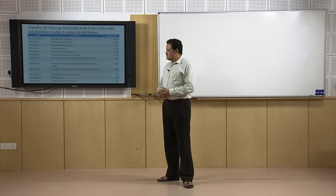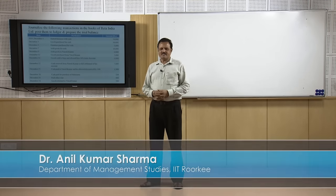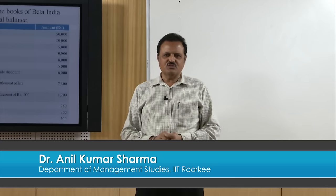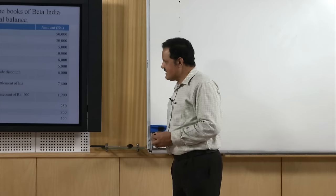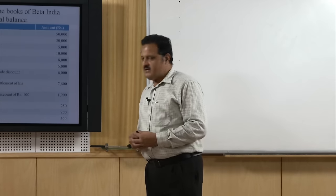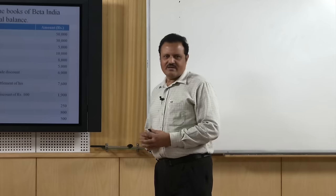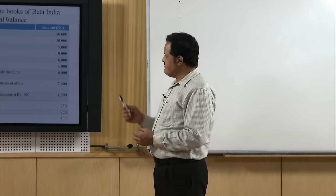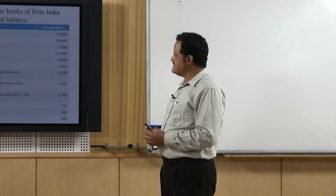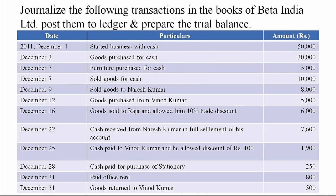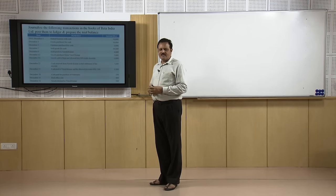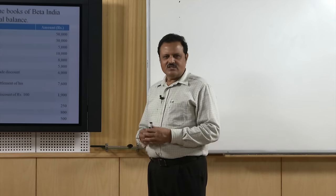Welcome students. Continuing from our previous discussion, we were learning how to prepare the journal, the first or original book of accounts. We were passing journal entries and had finished 9 transactions. Three more transactions are left. We will record these 3 transactions in the journal and then move to the ledger, the next book of accounts, posting all transactions recorded in the journal into the ledger.